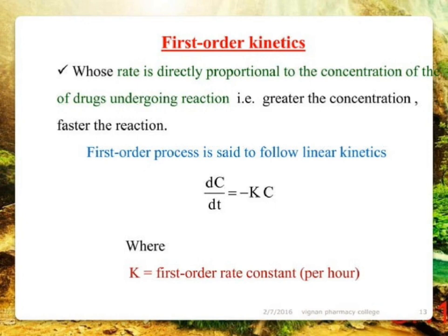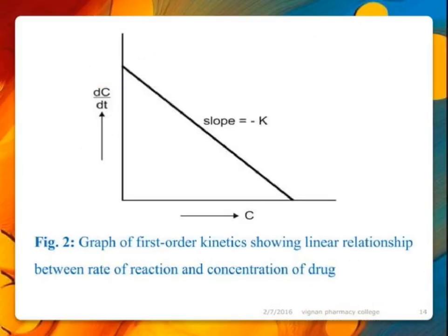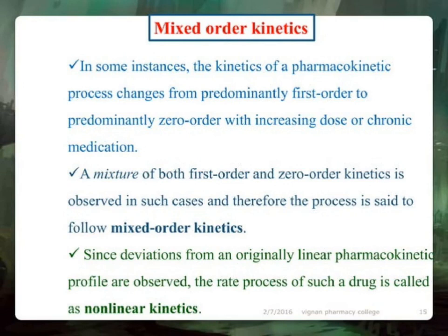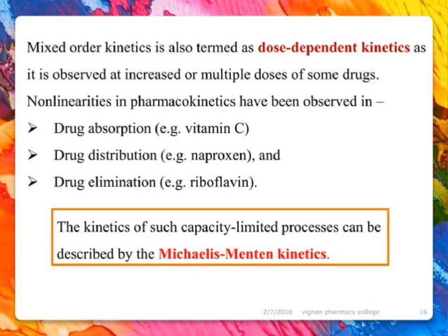First order kinetics: the rate is directly proportional to the concentration of the drug undergoing reaction — i.e., greater the concentration, faster the reaction. First order process is said to follow linear kinetics: dC/dt = −kC, where k is the first order rate constant per hour. Mixed order kinetics: in some instances, the kinetics of a pharmacokinetic process changes from predominantly first order to predominantly zero order with increasing dose or chronic medication. A mixture of both first and zero order kinetics is observed, and the process is said to follow mixed order (also called dose-dependent or nonlinear) kinetics.